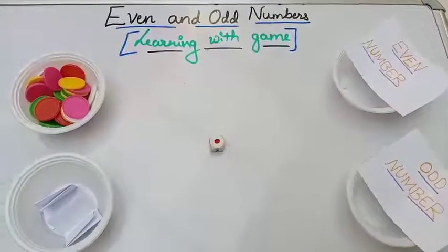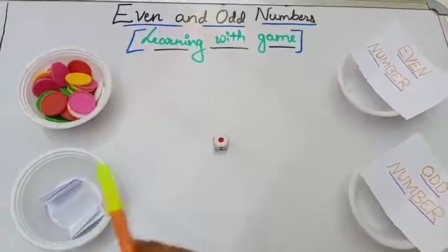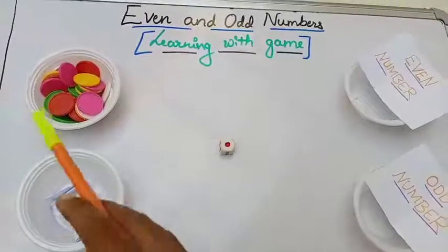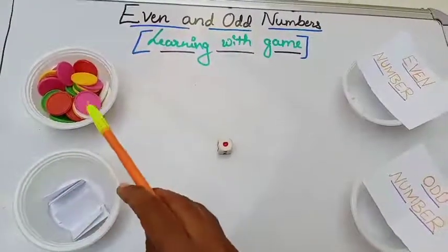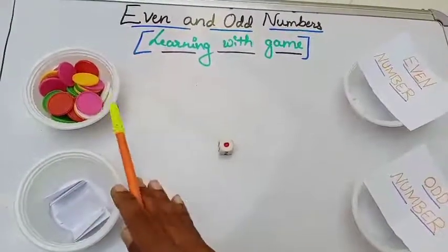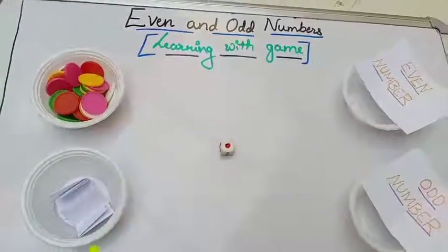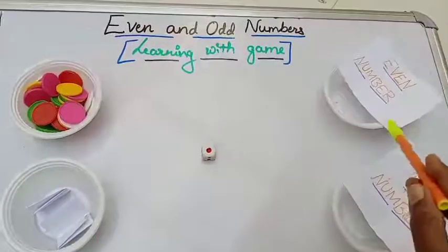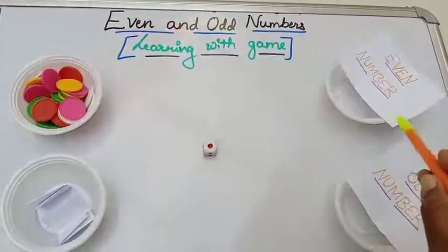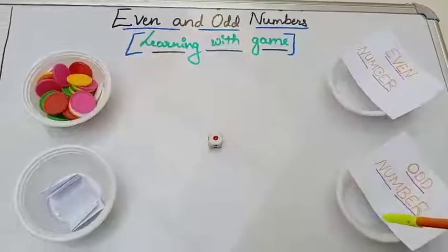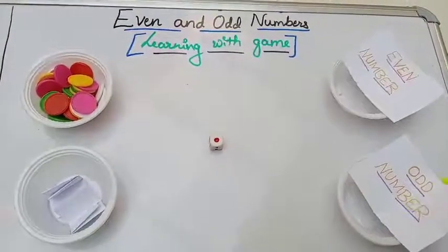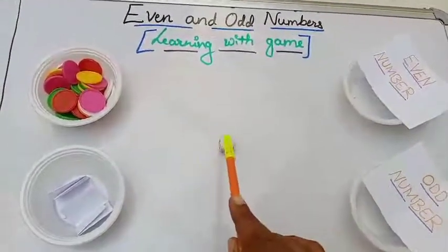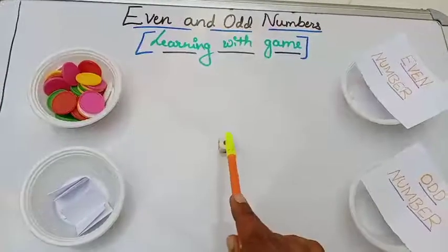For this game, we need four bowls. In the first one you have to keep coins, the second one has chits, the third one is the even number bowl, and the fourth one is the odd number bowl. You also need to take a dice.